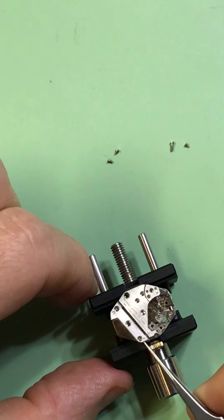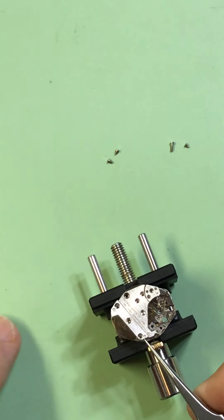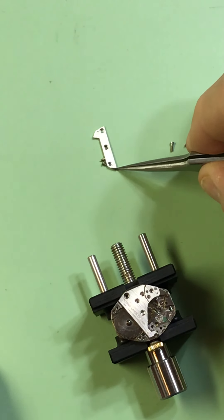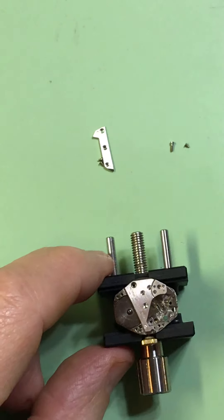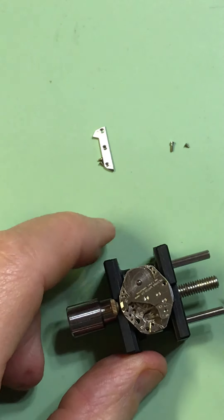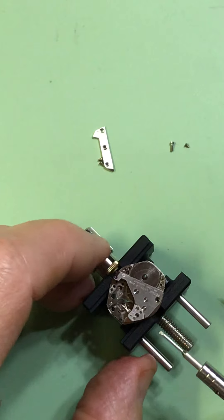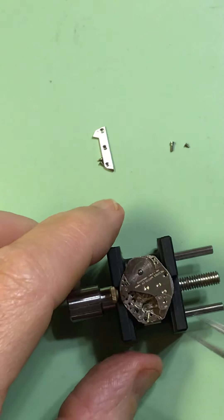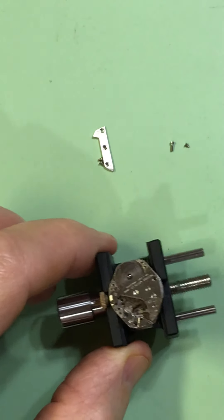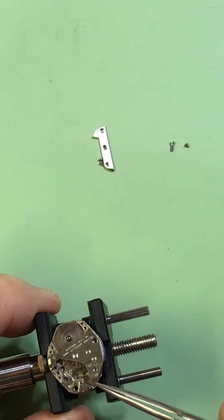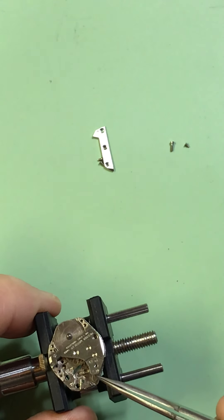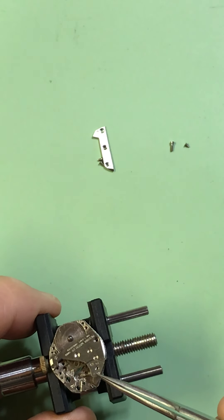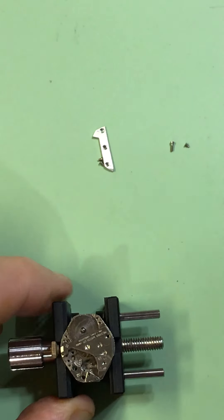So we have this plate, the barrel bridge. The barrel bridge goes with these two screws here, and then the removal of the train wheel and pallet bridge. It's important to note that the pallets is a very long stem and it seats right here in the train wheel bridge.